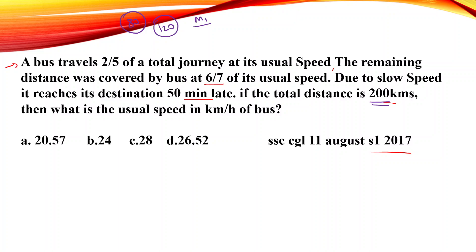I will explain the question. The remaining distance was covered at 6/7 of the usual speed. So if the usual speed is S, the reduced speed is 6/7 of S, which we can call 6x.